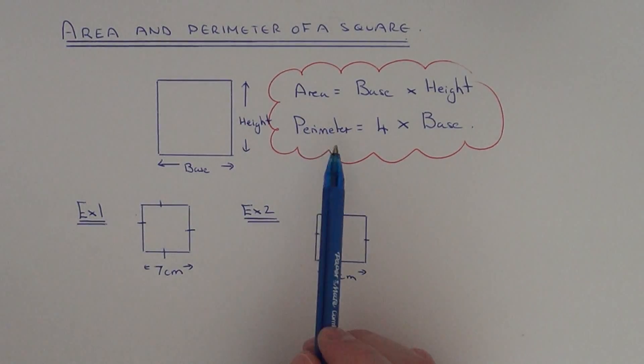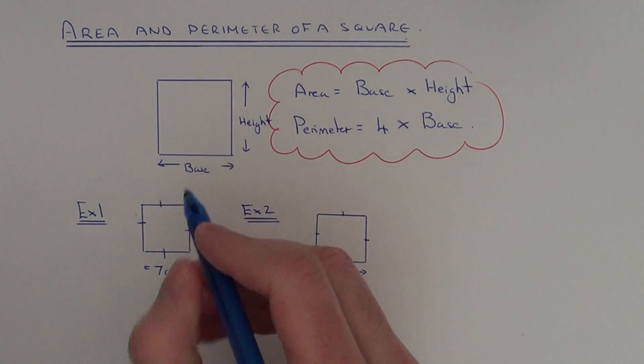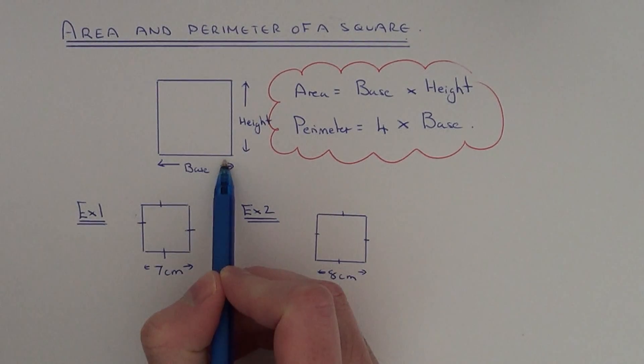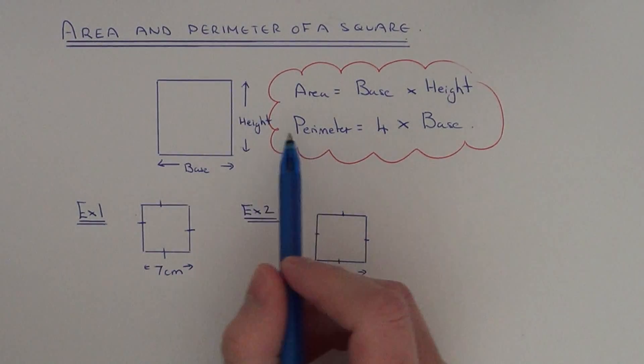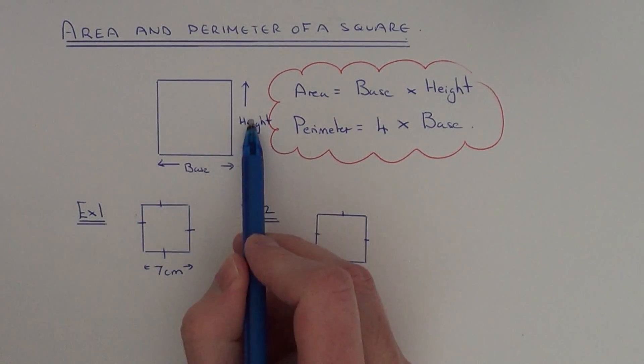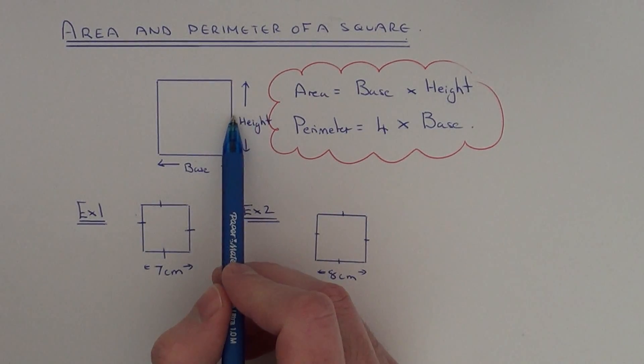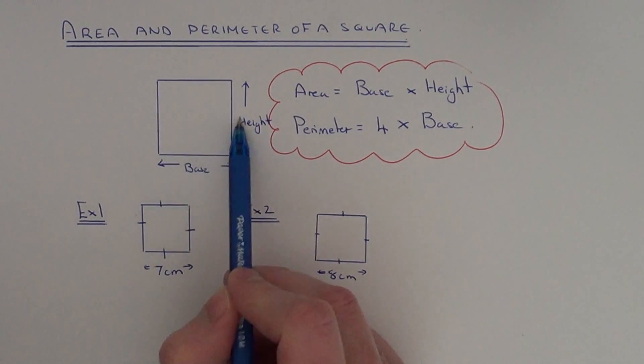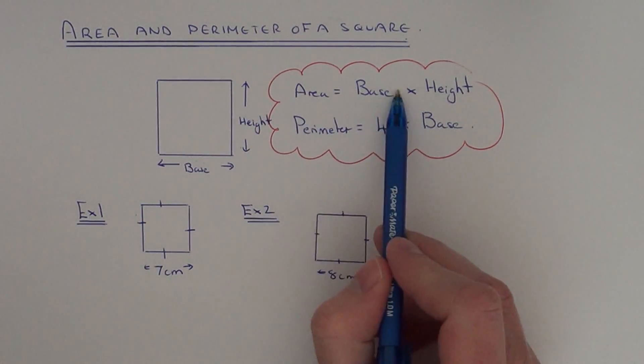If you have a square and you need to work out the area of it, you can multiply the base length of the square by the height. These two lengths should be the same because squares have the same side length all the way around. So the area is base times height.